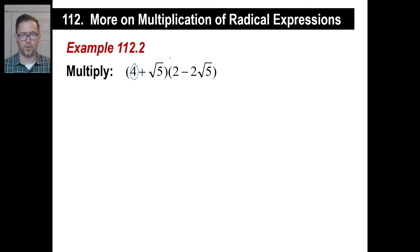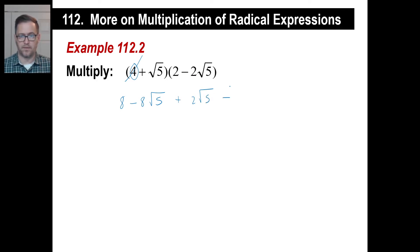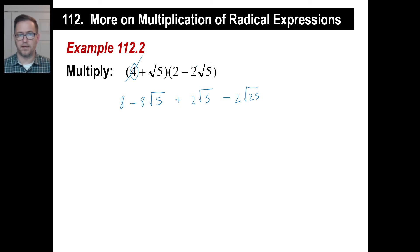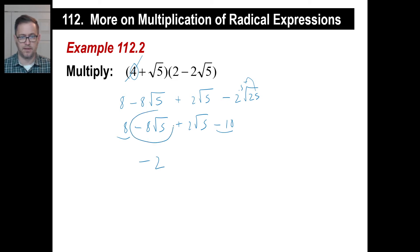Let's take care of 4 first: 4 times 2 is 8. We've got 4 times negative 2 square root of 5, which gives us negative 8 square root of 5. Next, square root of 5 times 2 gives us 2 square root of 5. Then plus times minus gives a minus — we have the square root of 5 times the square root of 5, which is the square root of 25. So we have 8 minus 8 square root of 5 plus 2 square root of 5, and minus 2 times the square root of 25 is just 2 times 5, which is minus 10. So 8 minus 10 is negative 2.